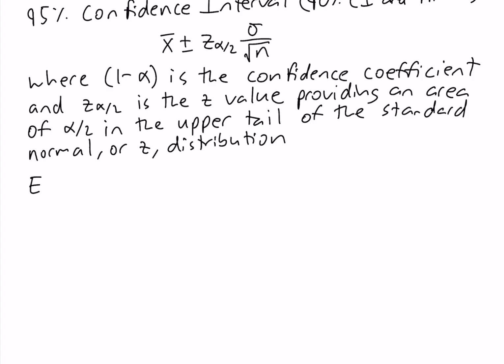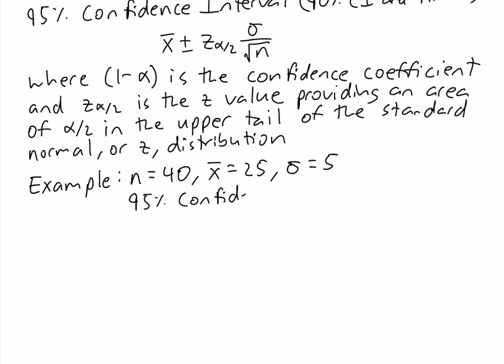Let's take a look at an example. Suppose we're told that the sample size is 40, the sample mean is 25, and the population standard deviation is 5, and we're asked to compute the 95% confidence interval. Since we're given sigma, the population standard deviation, we know that it's the sigma known case. So we use this formula: x-bar is 25, plus and minus z alpha/2, which we'll have to find, times sigma, which is 5, over the square root of n, which is 40.